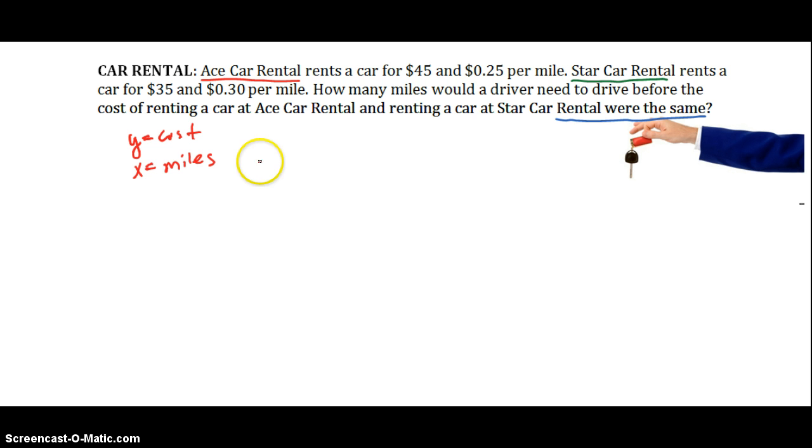Okay, first let's start with Ace Car Rental. I'm going to use y to represent the cost. I'm going to use x to represent the number of miles. All right, so for Ace Car, we don't know the total cost. We're trying to find out. But we know that for every mile, it costs $0.25. So 0.25 times x is going to be the cost of the miles. Plus $45, which we have to pay for the car rental. So there's our $45 and our $0.25.